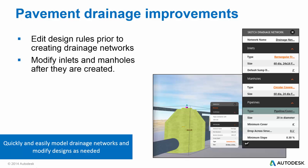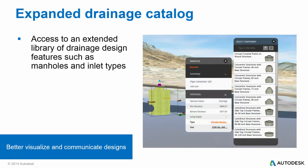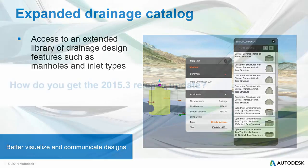This gives you the power to quickly model drainage networks and later modify designs as desired, ultimately allowing you to model drainage networks more accurately. The last improvement to this vertical application is an expanded library of drainage design features such as manholes and inlet types. With hundreds of options at your disposal, you are now able to better visualize and communicate your designs to all stakeholders.